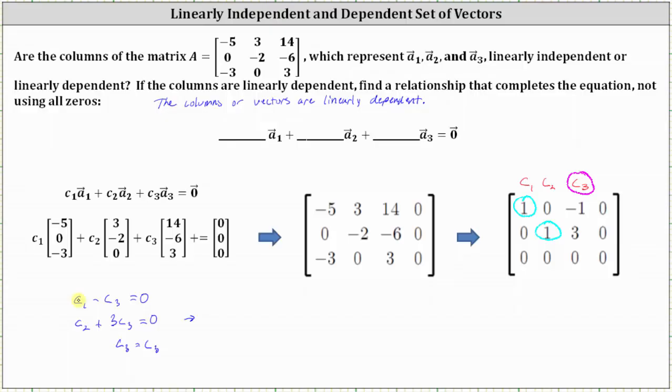So if C sub three is equal to t, notice C sub one is equal to t, and C sub two is equal to negative 3t.